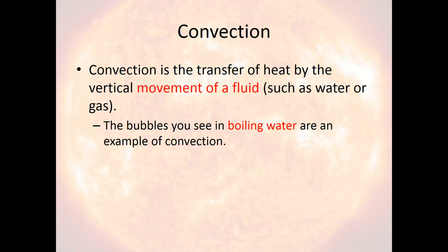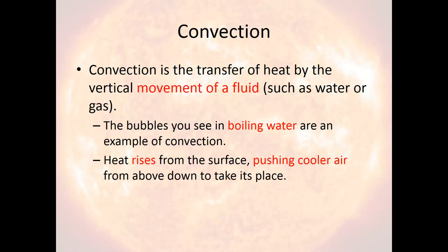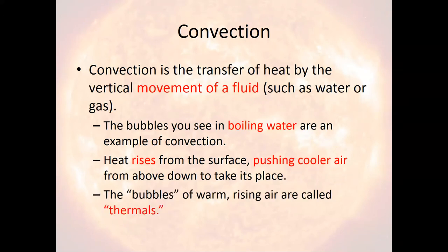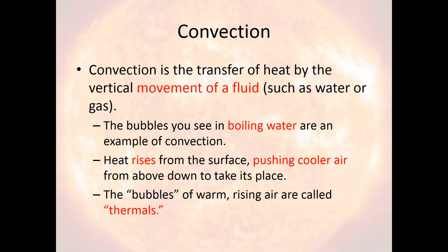That's how convection works: you have rising motion. Heat starts at the surface and then rises. As it rises, it doesn't rise into empty space — it pushes cooler air back down to take its place. That cooler air warms up and begins to rise, pushing more cold air down, which in turn warms up and rises. This process keeps happening until you have what are called thermals — bubbles of warm, rising air that start at the ground, get hot, rise, and force cold air down to take their place.